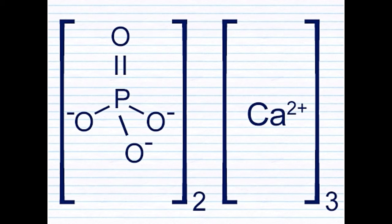The other three oxygen atoms are linked by single bonds, which leaves them with a valency of one, since oxygen needs two electrons to attain a stable configuration. The six oxygen atoms across the two phosphate ions constitute a net negative charge of six. This is neutralized by three Ca²⁺ ions, each with a positive charge of two.